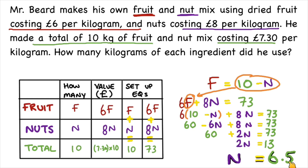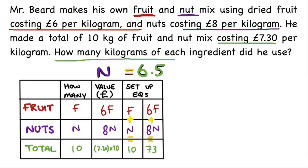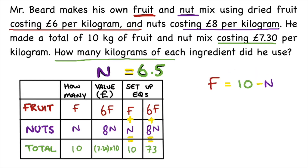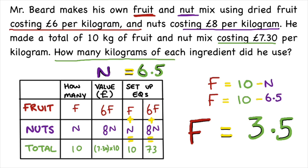So that means Mr. Baird buys 6.5 kg of nuts. To find the value of f, the amount of kilograms of fruit, we substitute the value of N back into the rearranged equation f equals 10 minus N. So the amount of kilograms of fruit is 10 minus 6.5. Therefore, Mr. Baird buys 3.5 kg of fruit.